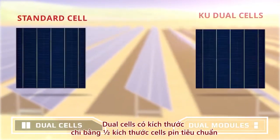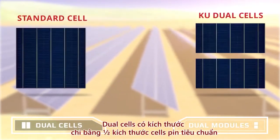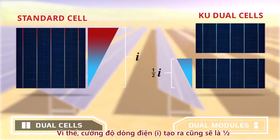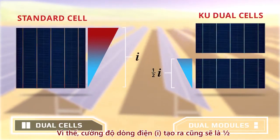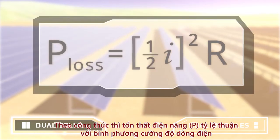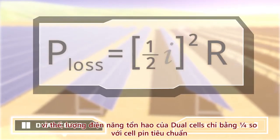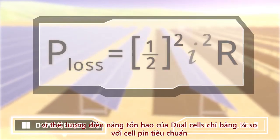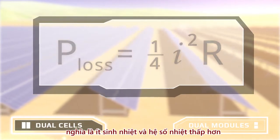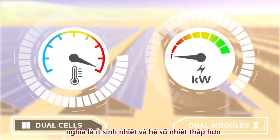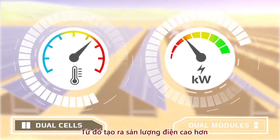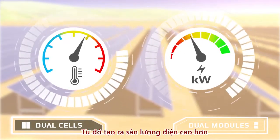Dual cells are half the width of standard cells. Cells with half the width generate half the current. Because the power loss goes as the square of the current, dual cells generate only one quarter of the power loss, which means less heat generated. Because the module operates cooler and has a better temperature coefficient, it can generate a higher power output.